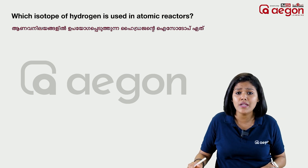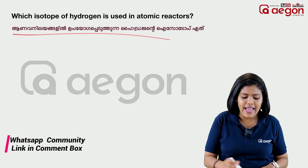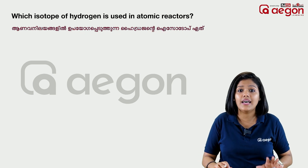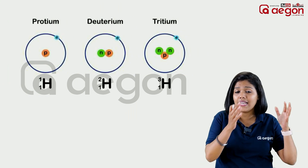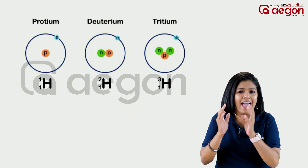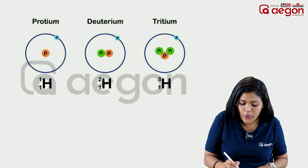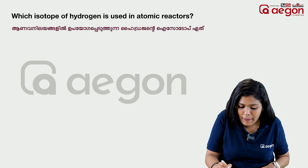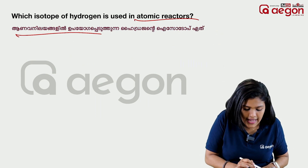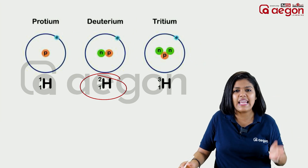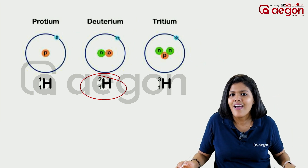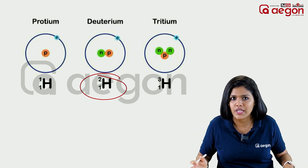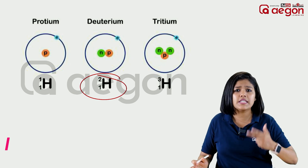Which isotopes of Hydrogen are used in atomic reactors? Hydrogen has three isotopes: Protium, Deuterium, and Tritium. Deuterium is used in atomic reactors. H-2 is the isotope used. We also have Uranium-235 which is relevant here.